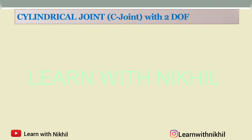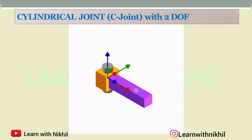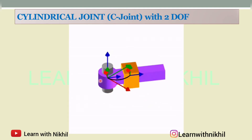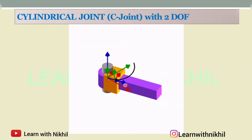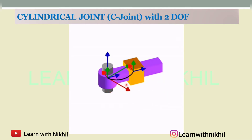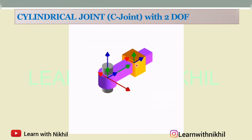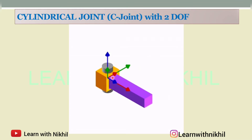Next, the cylindrical joint, also known as C joint, has two degrees of freedom. It has one revolute joint and one prismatic joint — these two joints give it two degrees of freedom: one revolute and one prismatic.